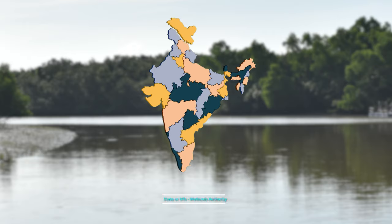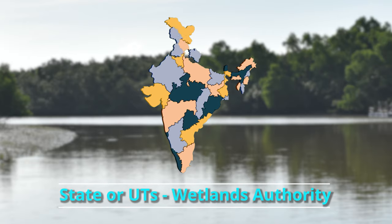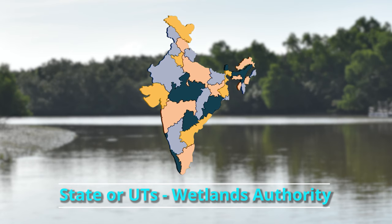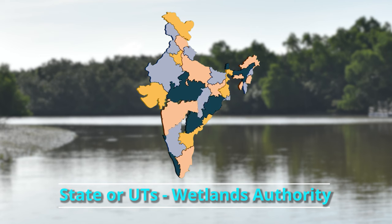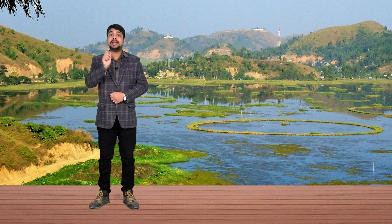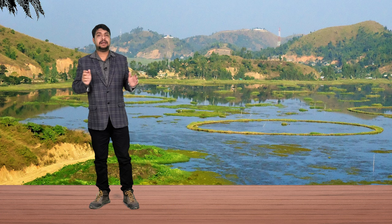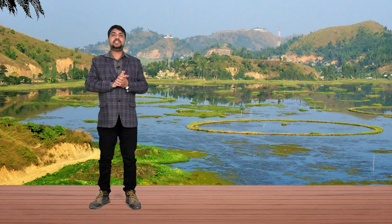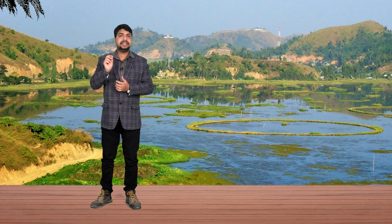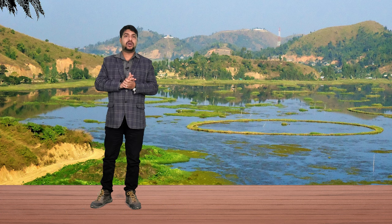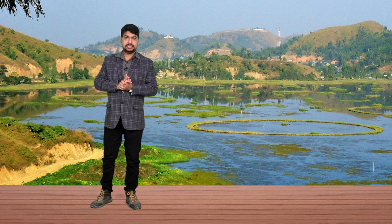Under these rules, each state or union territory has its own specific state wetland authority with technical and grievance committees. There is also a National Wetland Committee. Under these committees, experts of different backgrounds and officials of different departments work together to manage wetlands.